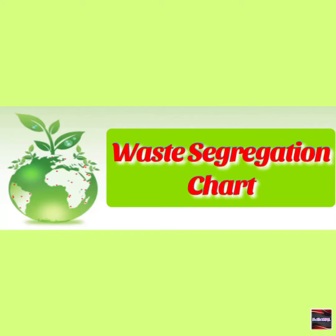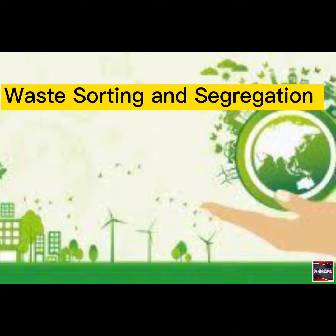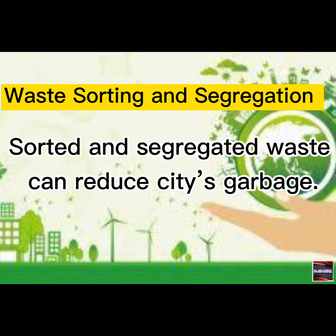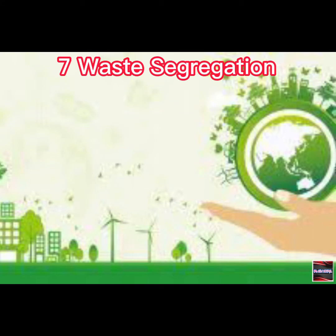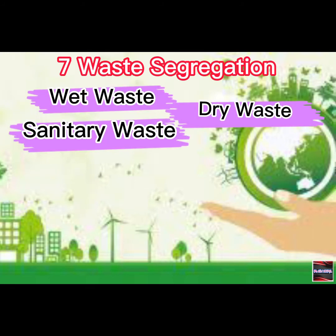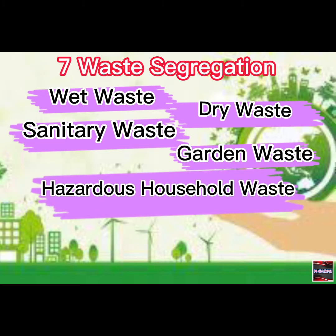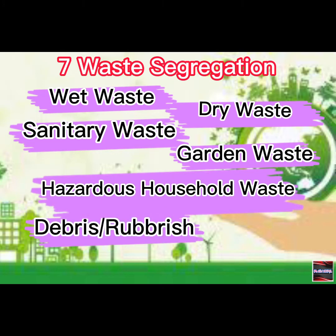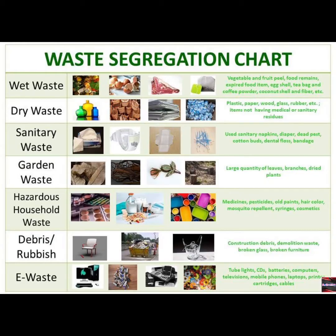Waste Segregation Chart: Waste sorting and segregation — sorted and segregated waste can reduce cities' garbage. There are seven waste segregation categories. These are wet waste, dry waste, sanitary waste, garden waste, hazardous household waste, debris or rubbish, and e-waste. Look at the segregation chart.